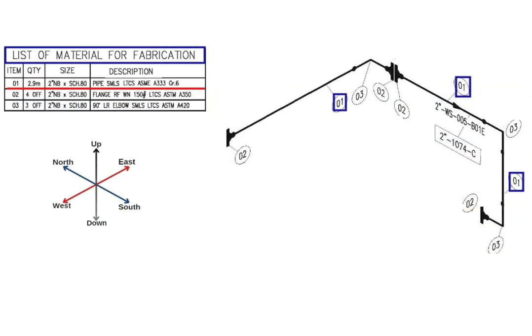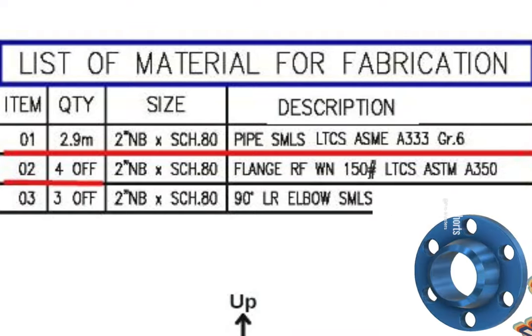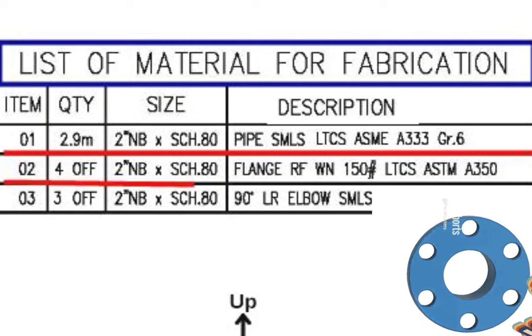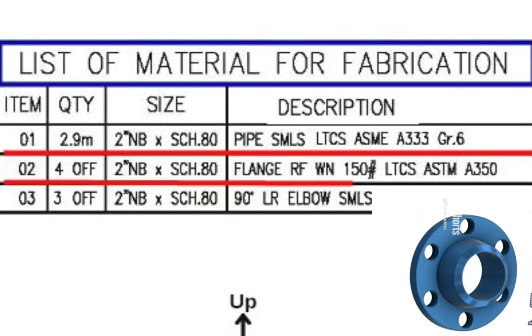Detail number 2 was used in 4 places in the pipe drawing. Let's look at the material list. Item number 2: quantity total is 4 pieces, size is 2 inches, wall thickness is schedule 80, flange, raised face, weld neck, class is number 150, low temperature carbon steel material, ASME A350.